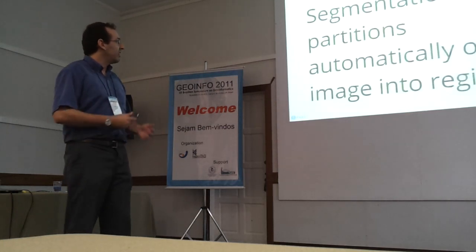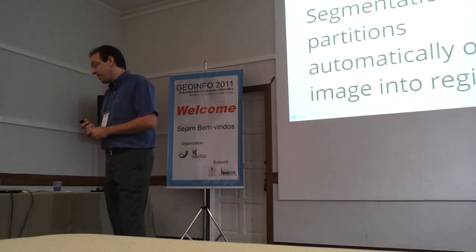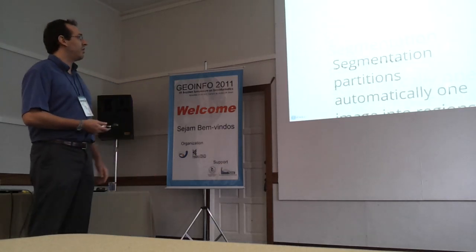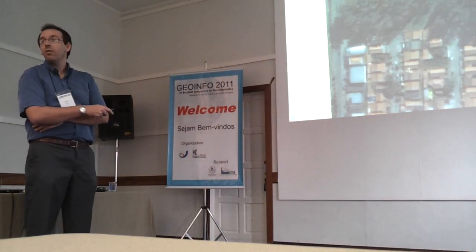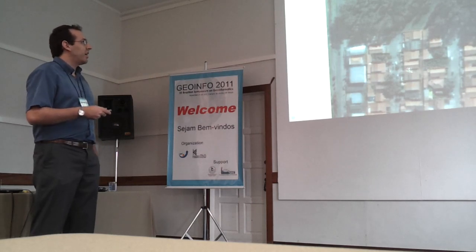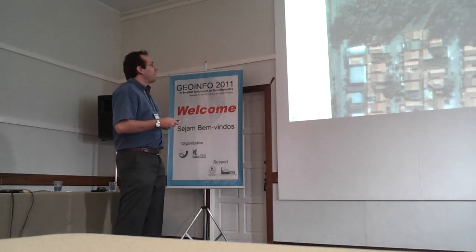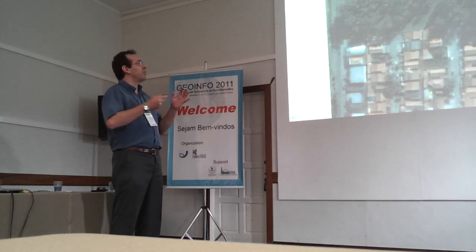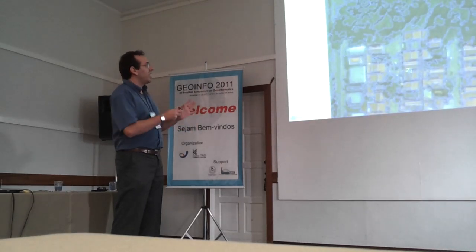What is segmentation? A very simple definition is that segmentation automatically partitions one image into regions. For example, suppose we have a remote sensing image — a small crop of an urban area. We expect that segmentation algorithms would automatically split this image into regions, creating something like a set of polygons.